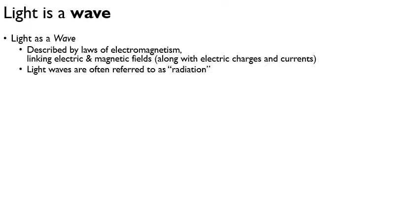Light as a wave is described by the laws of electromagnetism. These laws link electric and magnetic fields together, along with stationary electric charges and moving electric charges, which we call currents. This is a fascinating field, mostly governed by Maxwell's equations. For our purposes, we just need to know that these laws of electromagnetism govern how electric and magnetic fields are linked with charges. When we talk about light waves, we often refer to these as radiation.